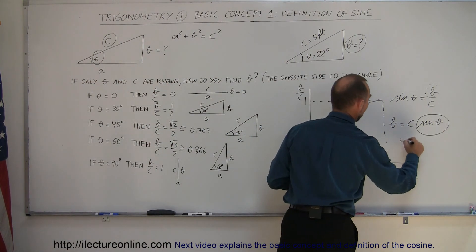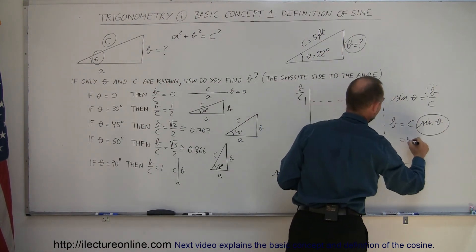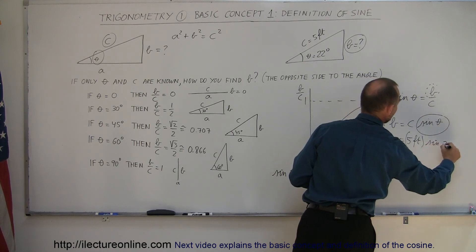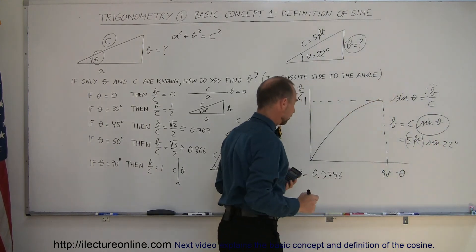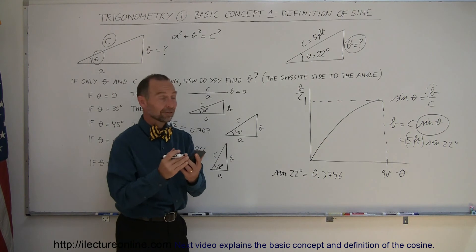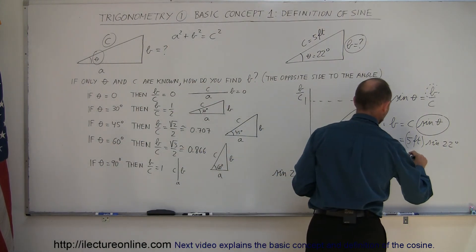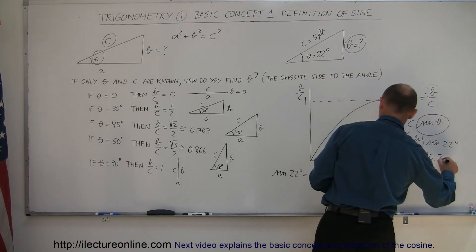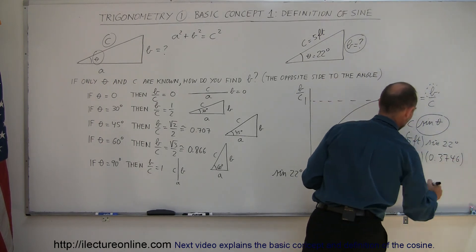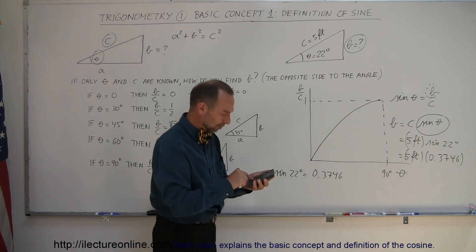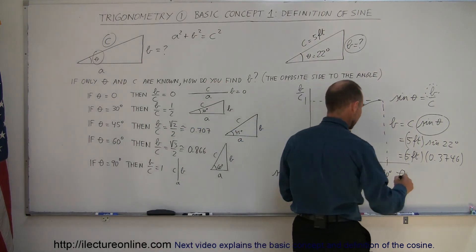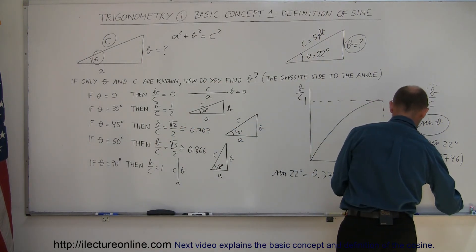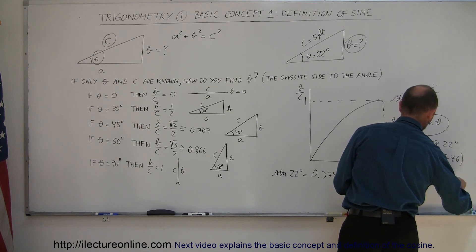Since the sine of 22 degrees is easily found with a calculator, this equals 5 feet times 0.3746. If I multiply those two together, it turns out this equals 1.873 feet.